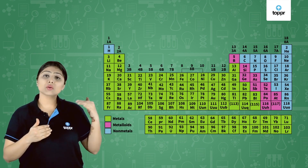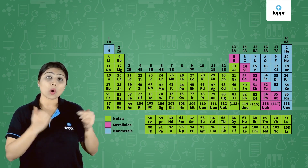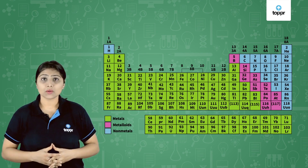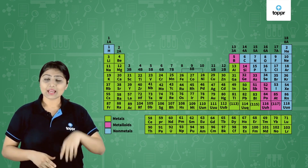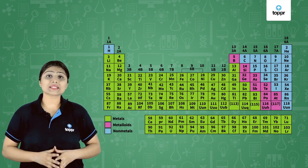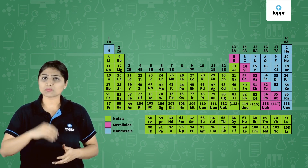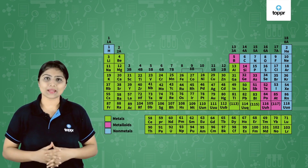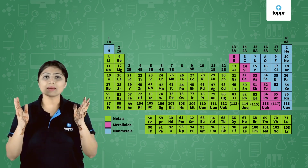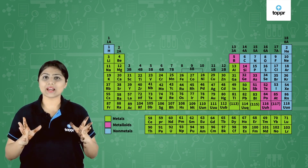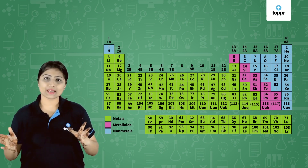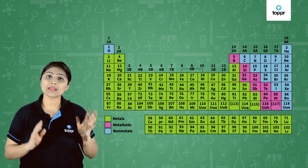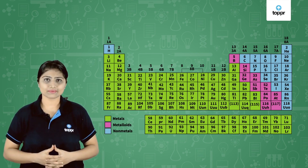Metals and non-metals have opposite properties to each other, whereas metalloids possess properties of both metals and non-metals. So an element is classified as metals, non-metals and metalloids.